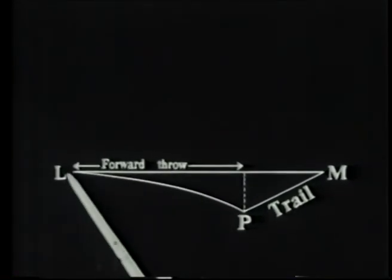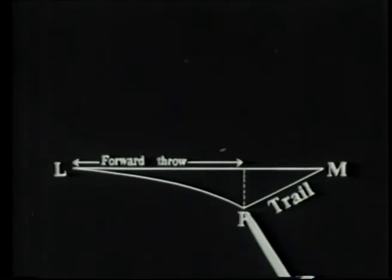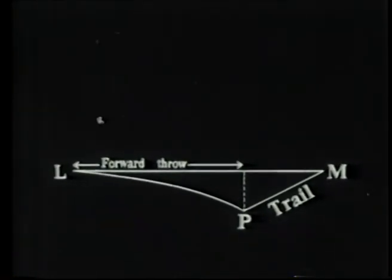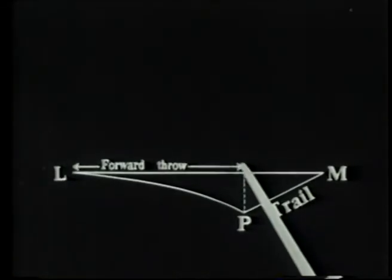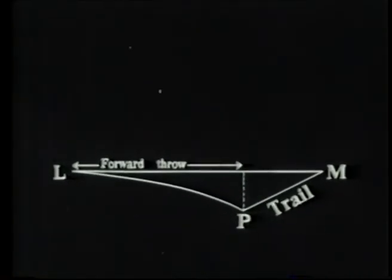The vector distance from the release point L to the point of impact P can thus be specified in terms of forward throw along track and cross trail across track.